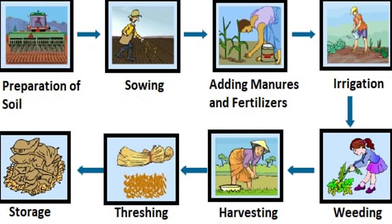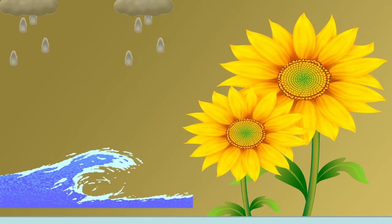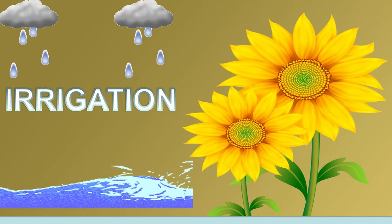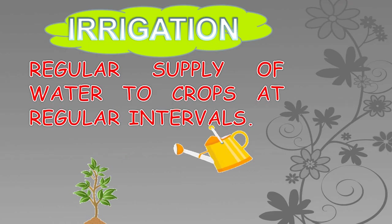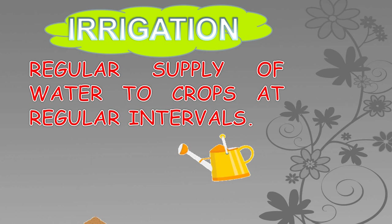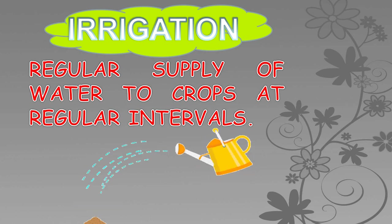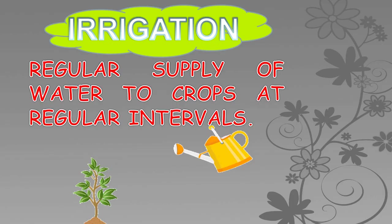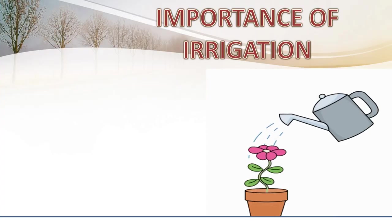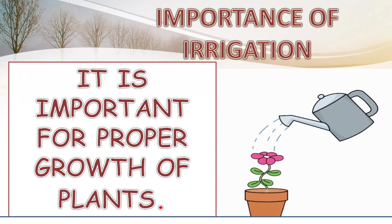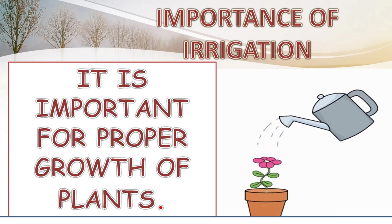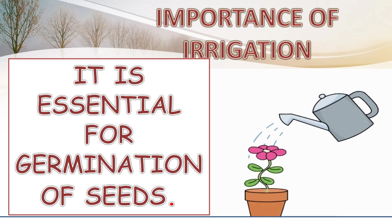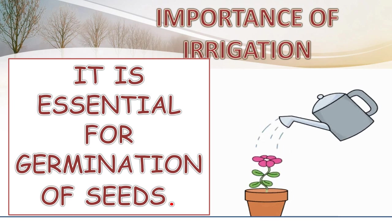We have completed the first three. Let's see the next one. Irrigation: Regular supply of water to crops at regular intervals. Importance of irrigation: It is important for proper growth of plants. It is essential for germination of seeds.